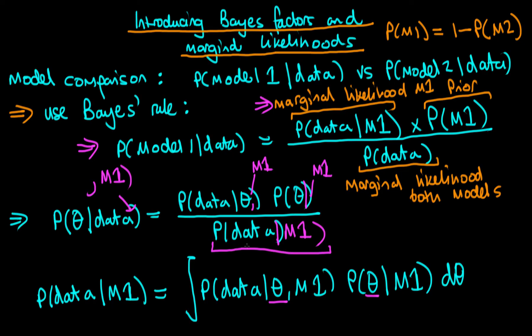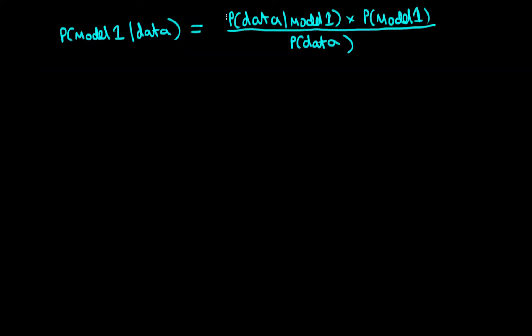Note that this integral, whilst I've written it as a univariate integral, if theta is a parameter vector — in other words a model with lots of parameters — then this will be a high-dimensional integral where the number of dimensions equals the number of parameters in our model. That's some of the difficulty behind calculating marginal likelihoods, because calculating high-dimensional integrals in general is difficult to do. So we've now described how to calculate the marginal likelihood of model one, which is this term in the numerator.